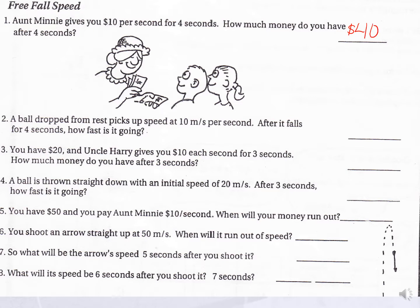A ball is dropped from rest and picks up speed at a rate of 10 meters per second squared. After it falls for 4 seconds, how fast would it be going? We know the rate we're picking up is 10 meters per second per second for 4 seconds — so that's 40 meters per second.